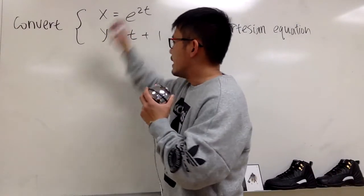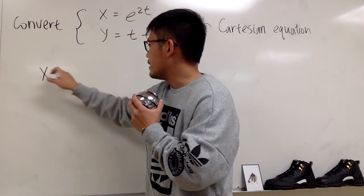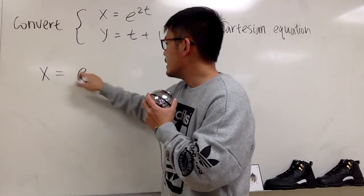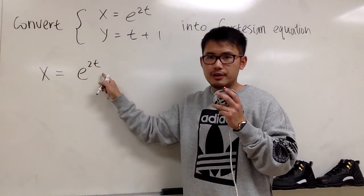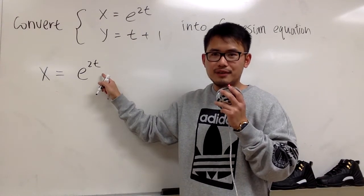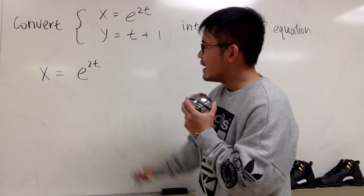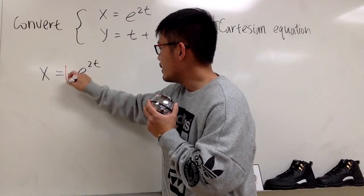So if you look at the x equation, let me write it down again here. x is equal to e to the 2t, and the t is right here. I want to get the t by itself first. So what do we do? This is e to the something, so we ln both sides.